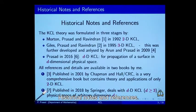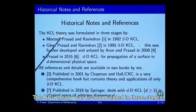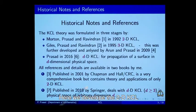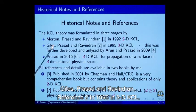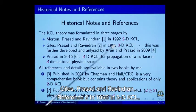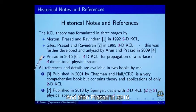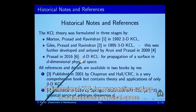Historical notes and references: KCL theory was first formulated in three stages. First, Morton, Prasad and Ravindran in 1992 developed the 2-D KCL. Giles, Prasad and Ravindran in 1995 developed the 3-D KCL. This was further developed and analyzed by Arun and Prasad in 2009. Then Prasad in 2016 formulated the D-dimensional KCL for a propagating surface in D-dimensional physical space.